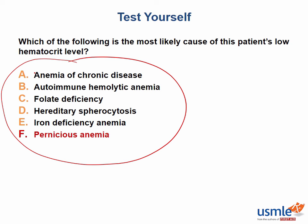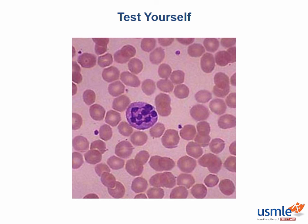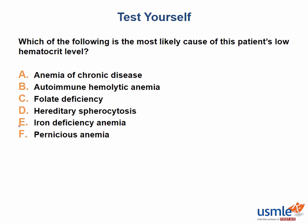After thinking through the answer choices, I would then read the question. We've got an older man with fatigue, nerve issues, an anemia, and a very elevated MCV. We also get a picture showing a hypersegmented neutrophil with lots of lobes. Iron deficiency anemia is usually microcytic, so I'd scratch that off. Anemia of chronic disease and autoimmune hemolytic anemia are usually normocytic and don't have nerve-related issues, so I'd eliminate those two. For hereditary spherocytosis, I'd expect a normocytic anemia and a spherocyte on the image — and since the image is focused on the neutrophil, hereditary spherocytosis is very unlikely.